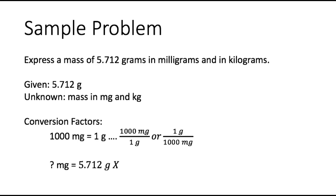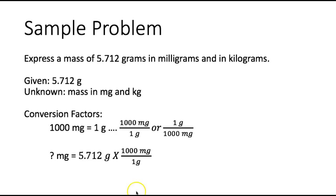First we're going to try to convert to milligrams. When I look at my conversion factor 1,000 milligrams equals 1 gram, I can express that in a fraction as 1,000 milligrams over 1 gram or as 1 gram over 1,000 milligrams. I know I'm looking for milligrams and I was given 5.712 grams to start with. So which of these two fractions do I want so that my grams will cancel out?